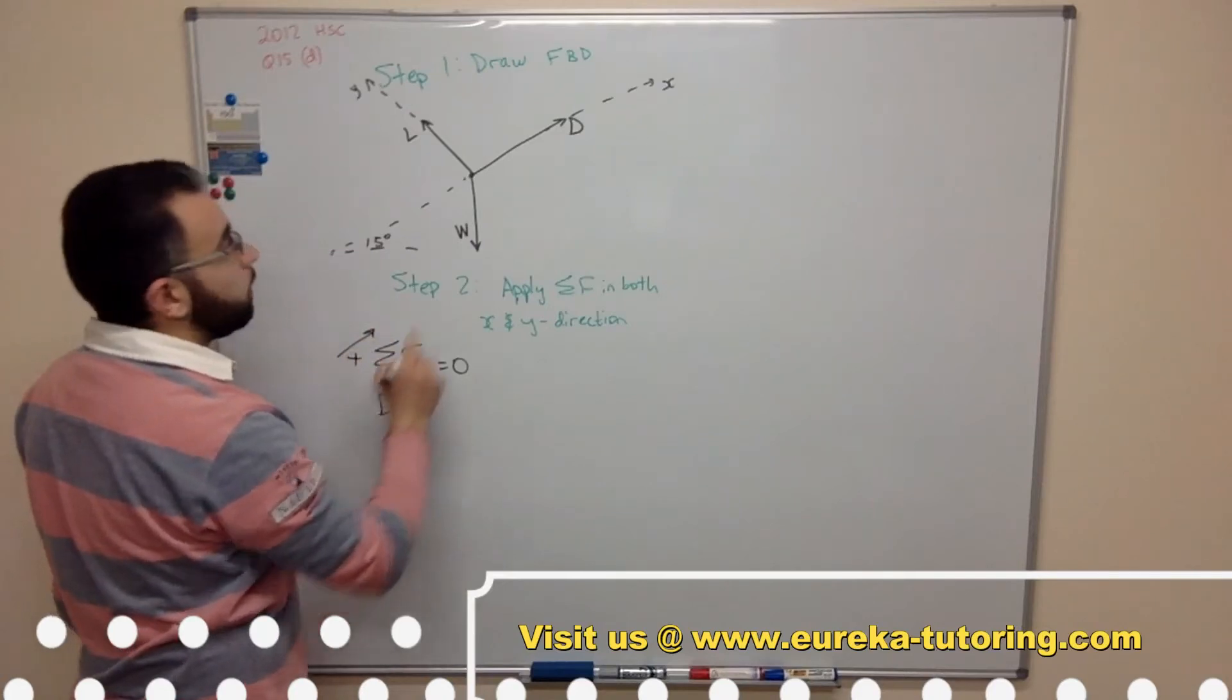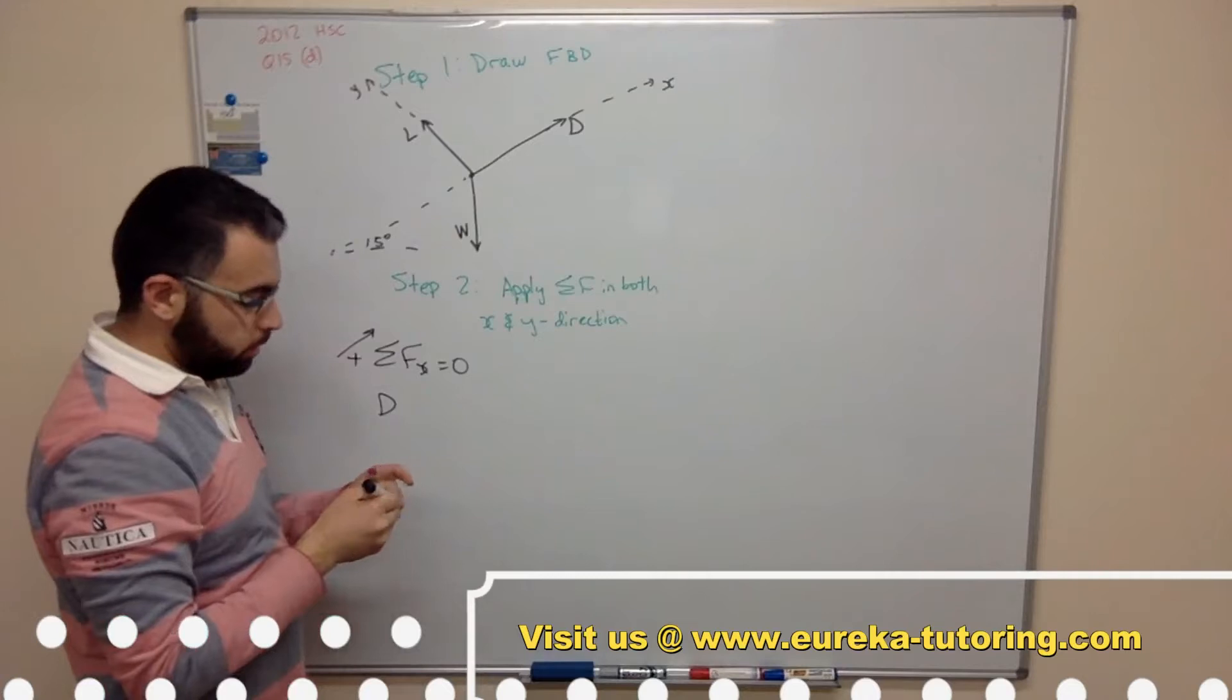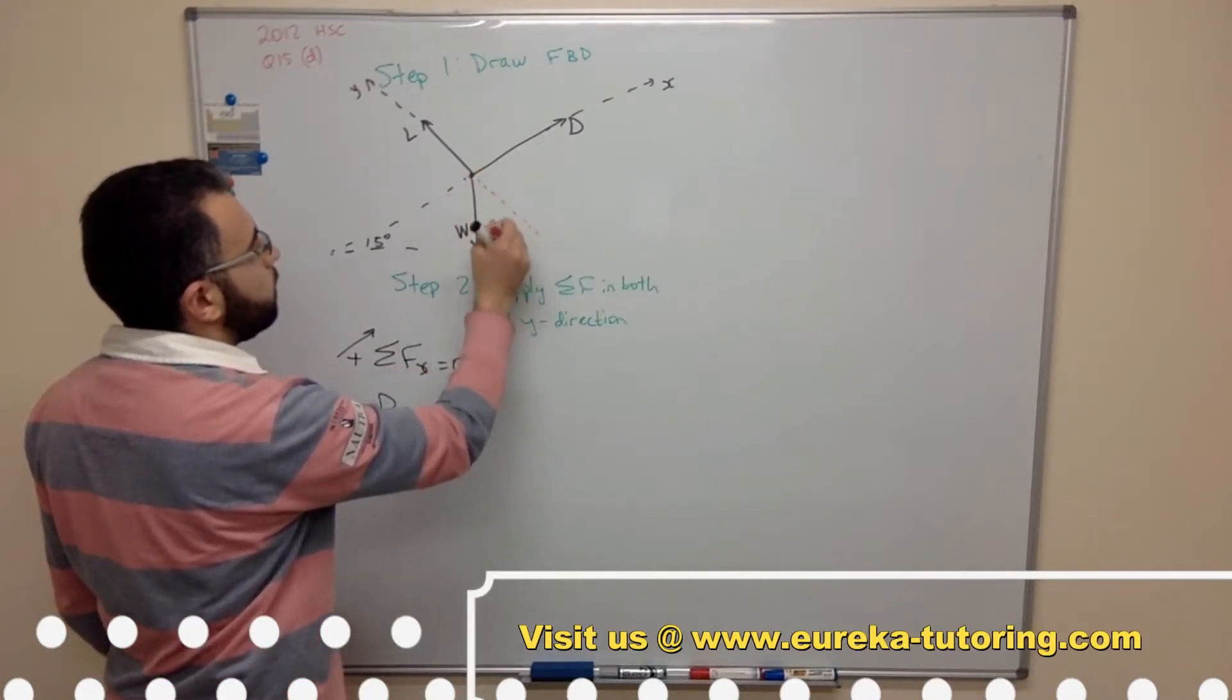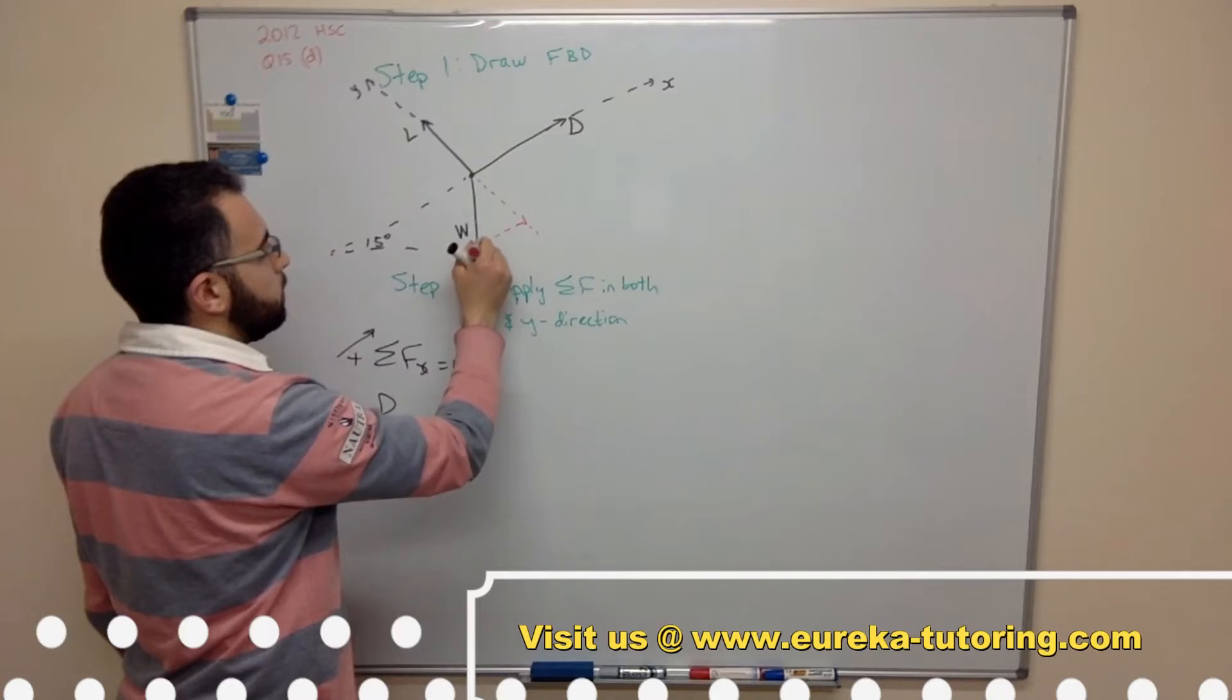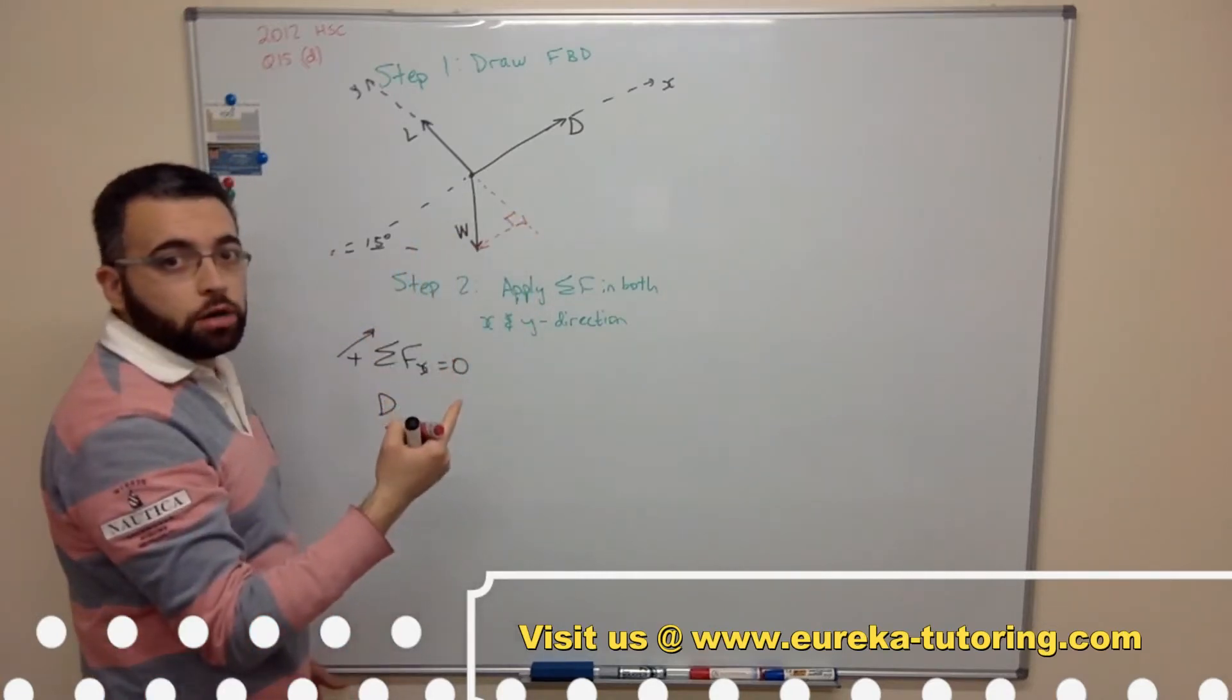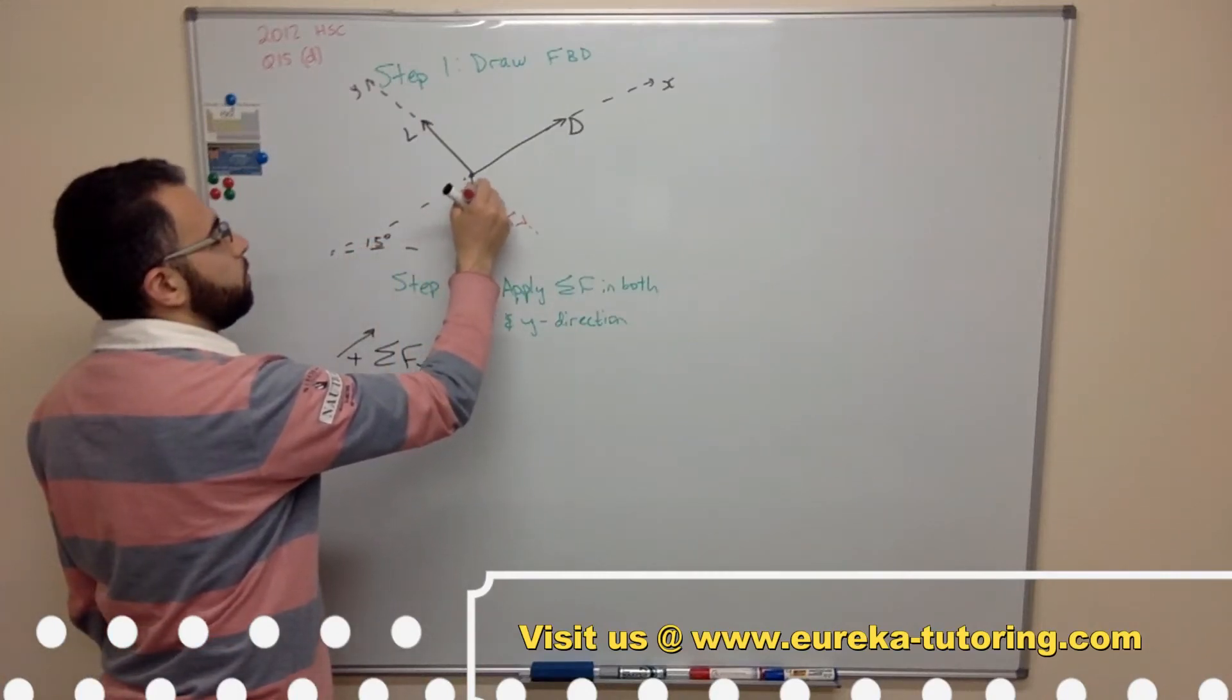So I have drag going in that direction. Now I need to break this into its horizontal and vertical components. So I'm going to draw a line in line with the lift so that's the y and the x will be parallel to the x axis. So this is our y and this is our x. This is 90 degrees. And due to similar triangles or similar angles this is also 15 degrees.